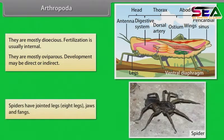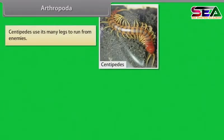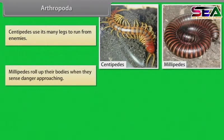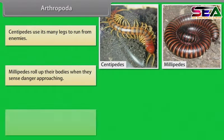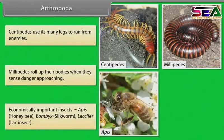Spiders have jointed legs — eight legs — jaws and fangs. Centipedes use their many legs to run from enemies. Millipedes roll up their bodies when they sense danger approaching.